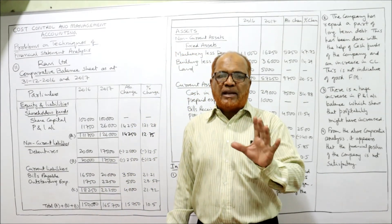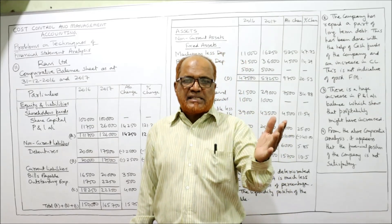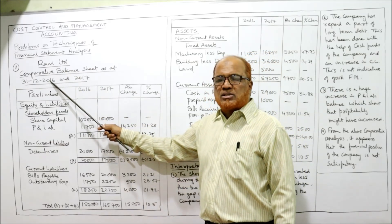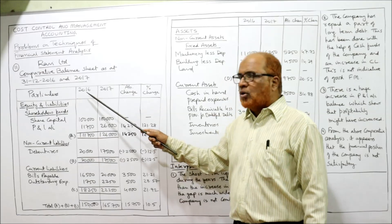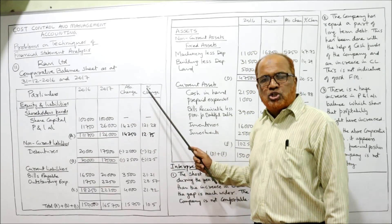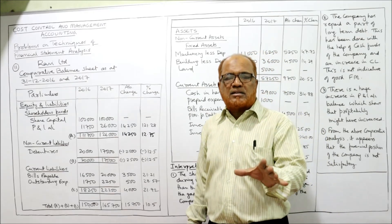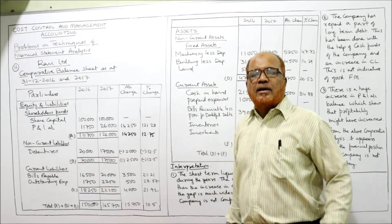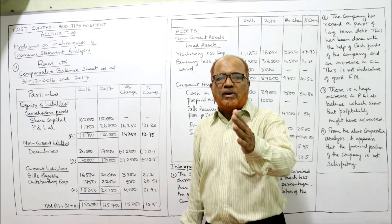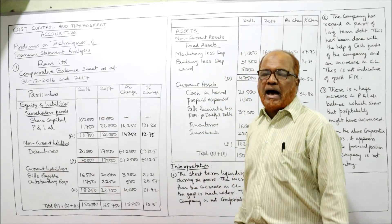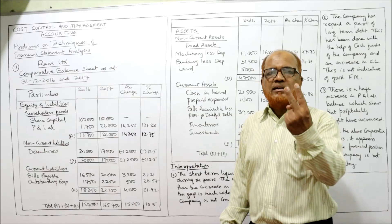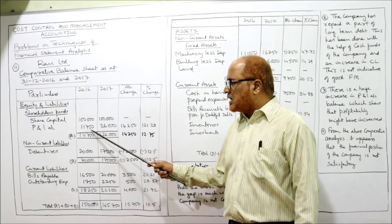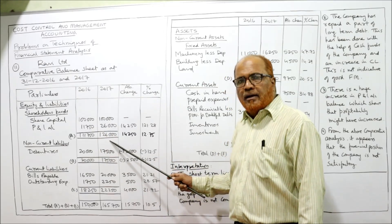We have to prepare a comparative balance sheet, just like the previous problem, with figures for 2016 and 2017. The format has three items on the liability side: shareholders fund, non-current liability, and current liability. For shareholders fund, two items are given: share capital and P&L account. Last year and current year values are taken to find total A.